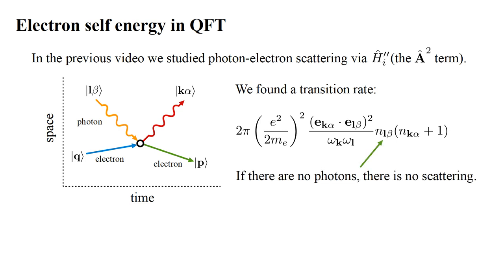Due to the factor N-L-Beta, if there are no photons present initially, there is no scattering. So we would expect the electron to continue on in its pure momentum state forever.